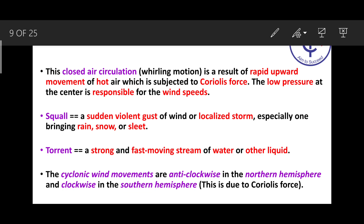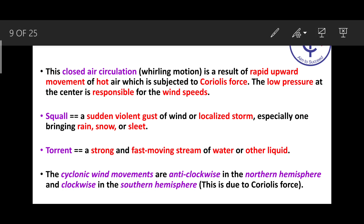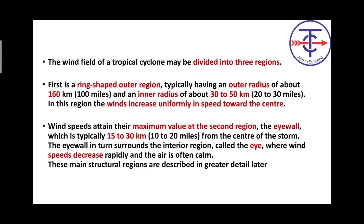A sudden violent gust of wind — a localized storm especially one bringing rain, snow, and sleet — the word used for this is 'squall.' Another term is 'torrent' — torrential rainfall means very heavy, intense rain; torrent refers to a fast-moving stream of water. Cyclone wind movements are anti-clockwise in the northern hemisphere and clockwise in the southern hemisphere, due to Coriolis force.